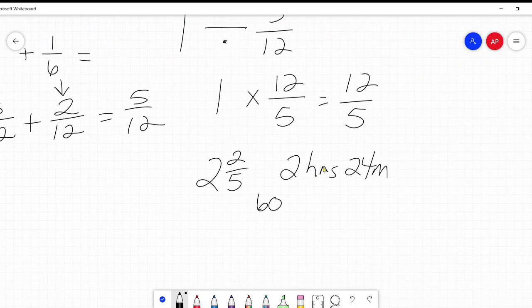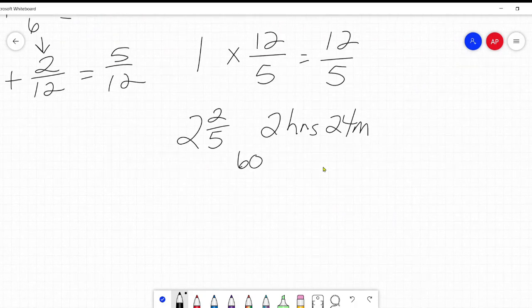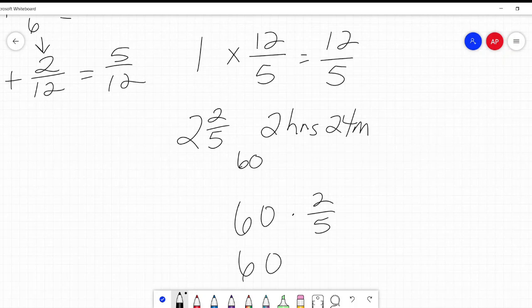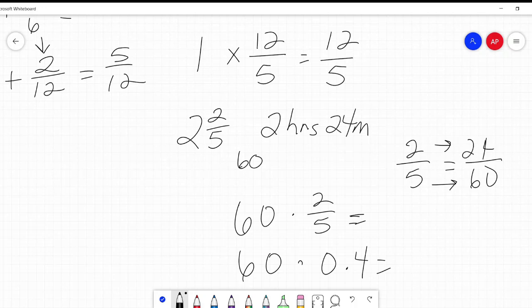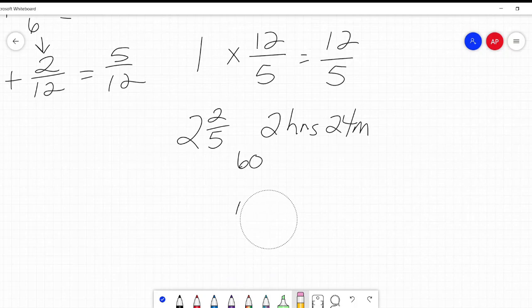And a little side note that two fifths of 60, you can solve that several ways. You can just say 60 times two fifths. You could say, oh, two fifths is the same as 0.4. You can do that either of those two ways. Or you can say, I want to convert two fifths into 60ths. Five times 12 is 60. Two times 12 is 24. So you get 24 here, and 24 here. So a lot of times in math, you'll find this. You'll have different ways. So just pick the one that you like best. What makes the most sense to you. All right, so two hours and 24 minutes.